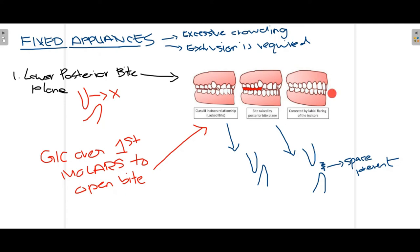This diagram shows how the lower posterior bite plane creates the necessary space for the maxillary incisor to move labially. Instead of using a lower posterior bite plane, we can also apply GIC on the first molar — the mechanism of action is similar. The main purpose is to create some space to achieve the labial movement of the teeth in cross bite.